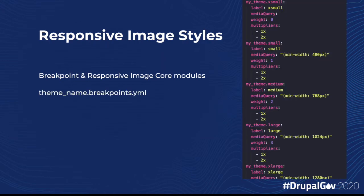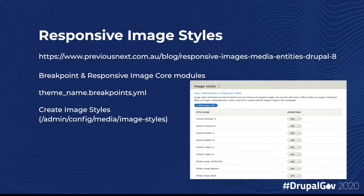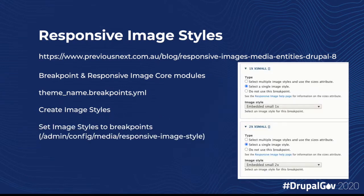You'll need to set up a breakpoints YAML in your theme, specifying your custom breakpoints. Then in the image styles admin, create an image style for each breakpoint. Set your dimensions for your image and save it with a descriptive name. Over in the responsive image styles admin, set your image styles for the breakpoints that you'll use them for.